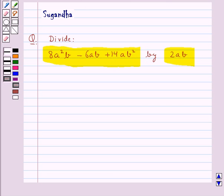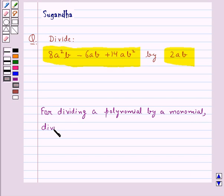Our key idea for this question would be that for dividing a polynomial by a monomial, divide each term of the polynomial by the monomial.